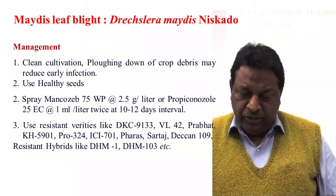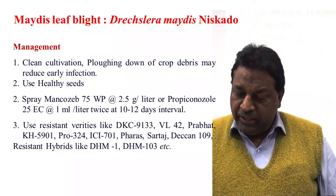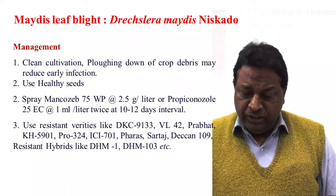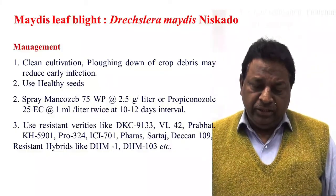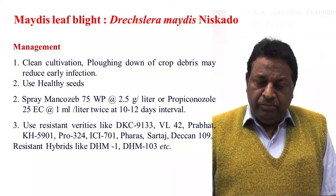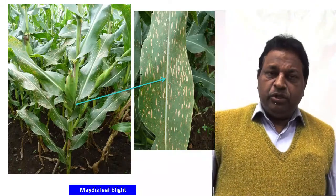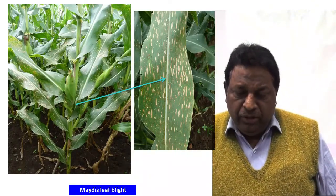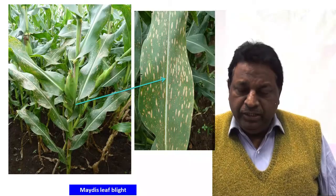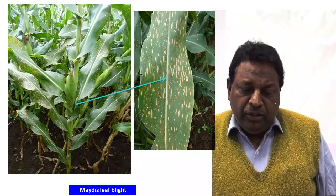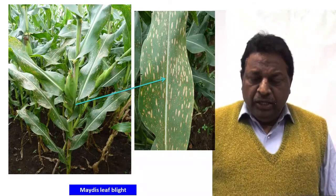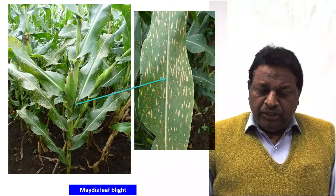Third, use of resistant varieties such as DKCU 9133, VL 42, Prabhat, Sartaj, Faras, Deccan 109. Some resistant hybrids are also reported, that is DHM1 and DHM103, which are resistant against this disease. Spots of Maydis leaf blight generally appear first on lower leaves as small spots, followed by upper leaves, and sometimes also appear on stems.